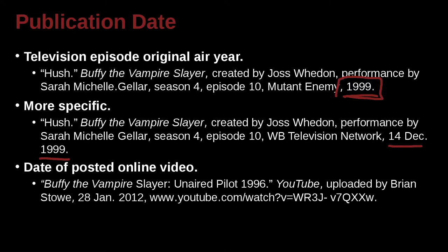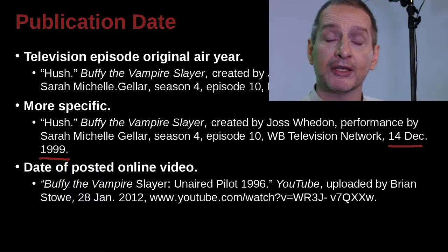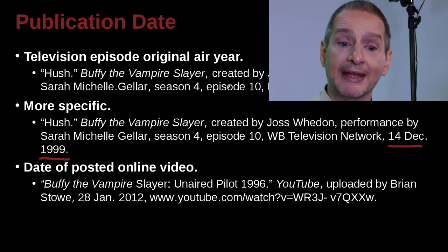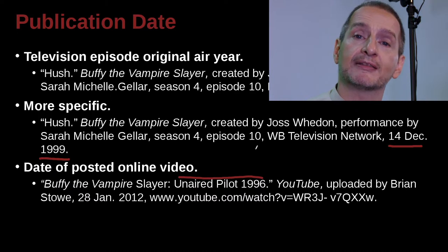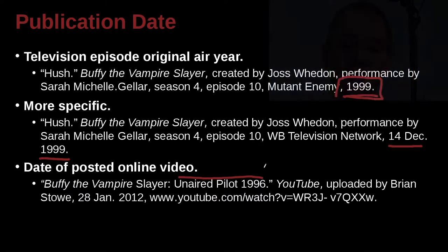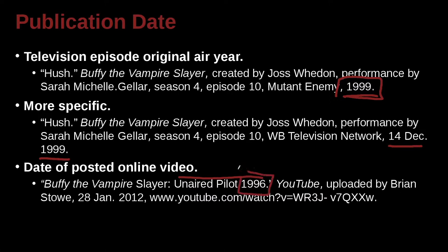In this example, we'll cite a video that was not on air but was online. We use the name — Buffy the Vampire Slayer, an unaired pilot, meaning it was created but never put on television, though now it's viewable on YouTube. The actual pilot was from 1996, so we put that information to clarify what we're citing. Where did we get it from? The container is YouTube. We need more detail: uploaded by Brian Stowe. The upload date was 28 January 2012, and then here's the URL address.